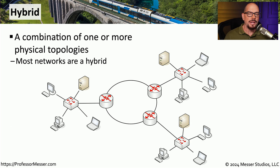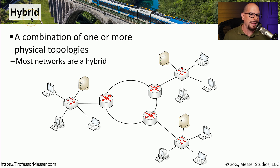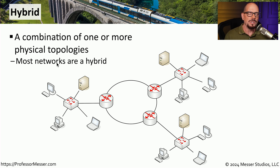If you were to look at a large enterprise network, you would notice there are a number of different architectures all being used in different parts of the network. When we combine all of those together, we've created a hybrid network. One part of the network might be a star network, another part may be point to point, and a third part might be a mesh network. Once we combine all of these together, we've created a hybrid architecture.